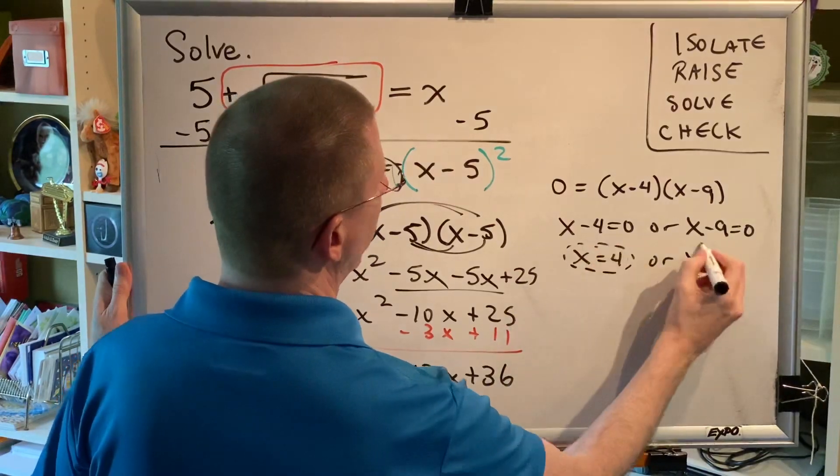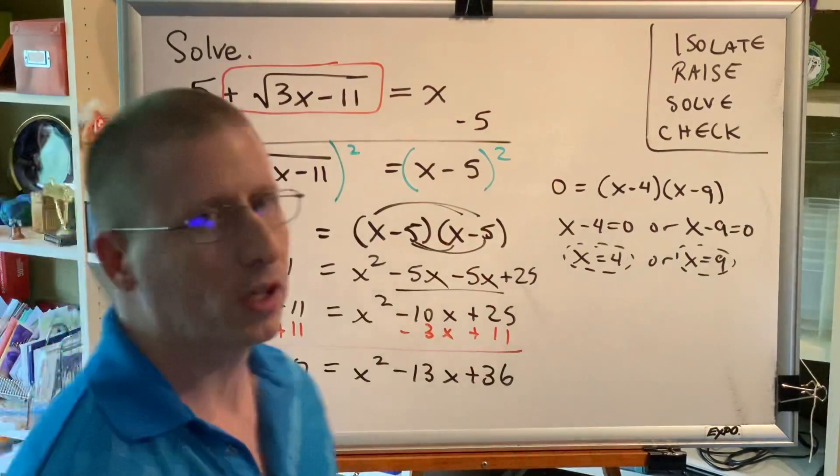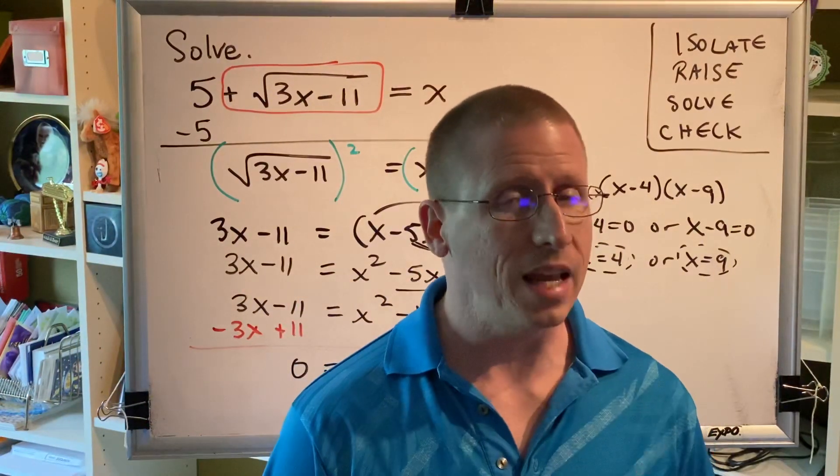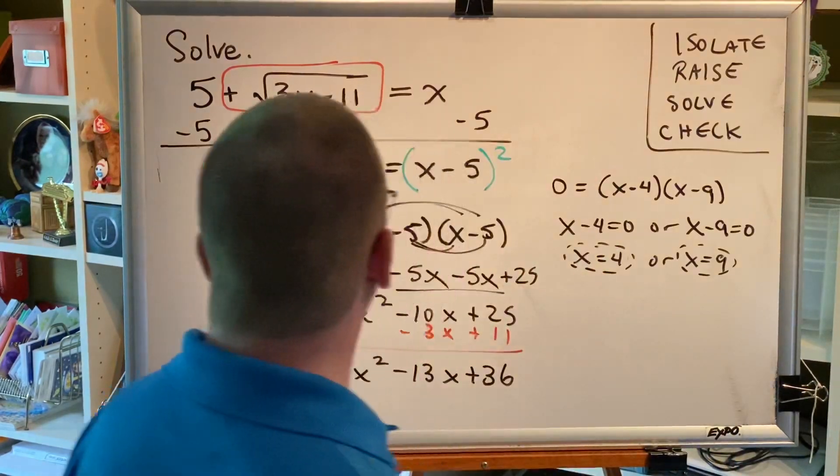when you're working with radical equations, step 2, raising both sides, introduces the possibility of extraneous solutions, which means either one of those answers could be extraneous. So we have to check both of them.